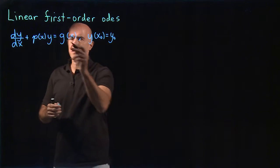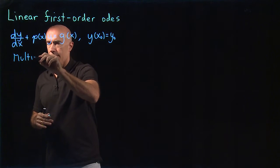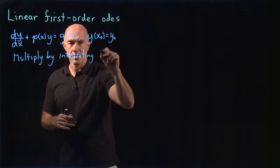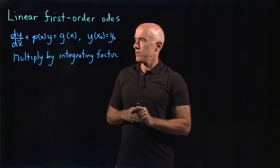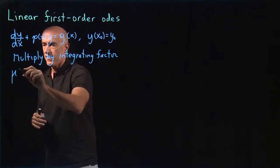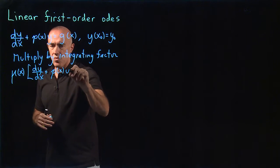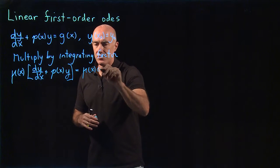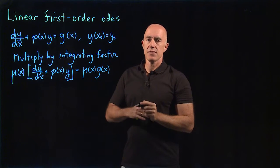The idea is that you take this equation and multiply it by something called an integrating factor. We multiply by an integrating factor, which I'm going to call mu — the Greek letter mu. So we multiply both sides by mu, and what we get is mu(x) times dy/dx plus p(x)y, equal to mu(x) times g(x). This integrating factor is going to help us integrate the differential equation.